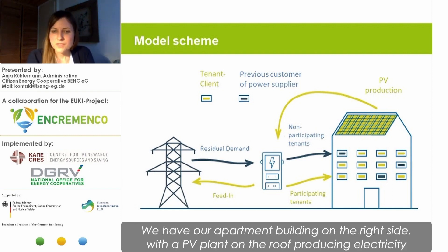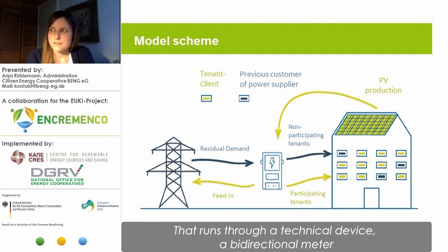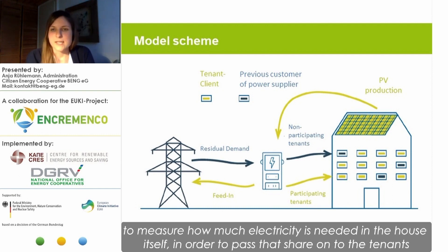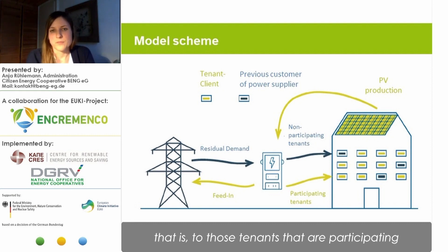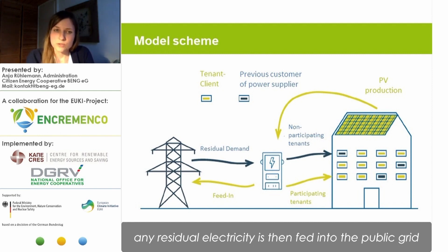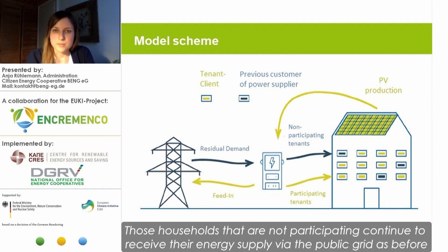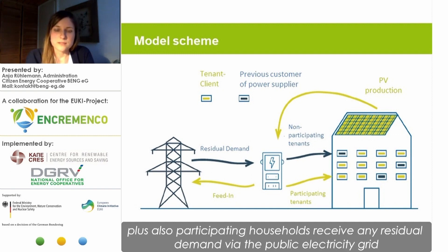The picture shows a very simplified model. We have our apartment building on the right side with a PV plant on the roof producing electricity. That runs through a technical device — a bidirectional meter — to measure how much electricity is needed in the house itself, and then passes the share on to the participating tenants. Any residual electricity is fed into the grid, or drawn from the grid as needed. Households not participating continue receiving electricity from the grid, and participating households also receive any residual demand via the public electricity grid.